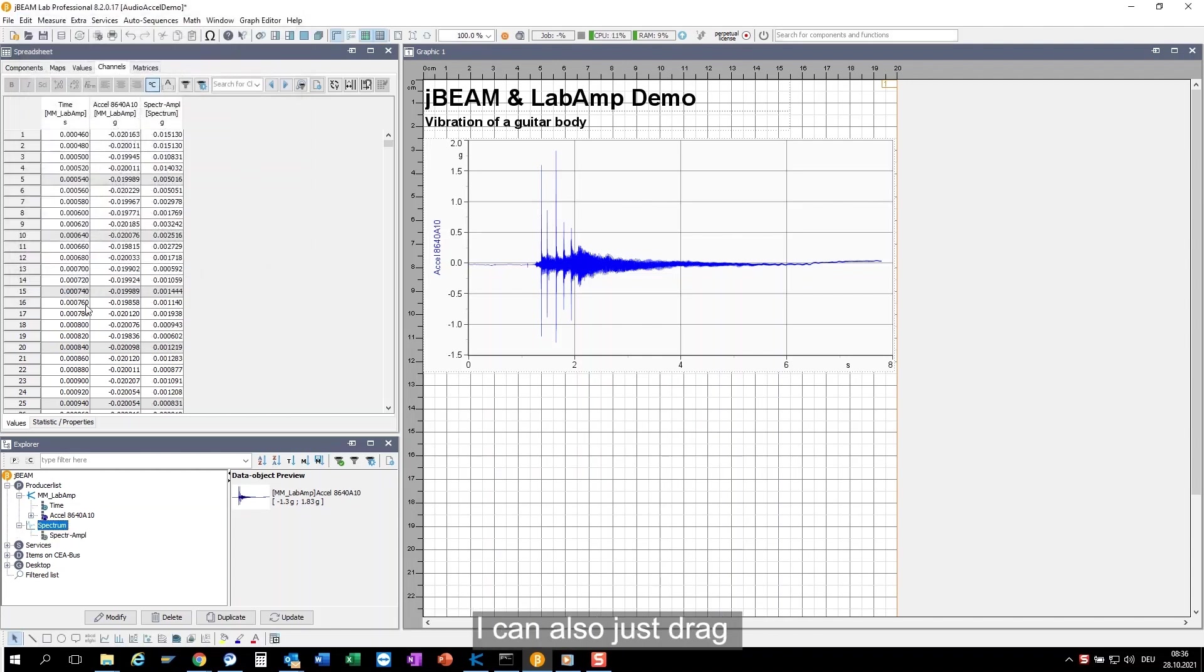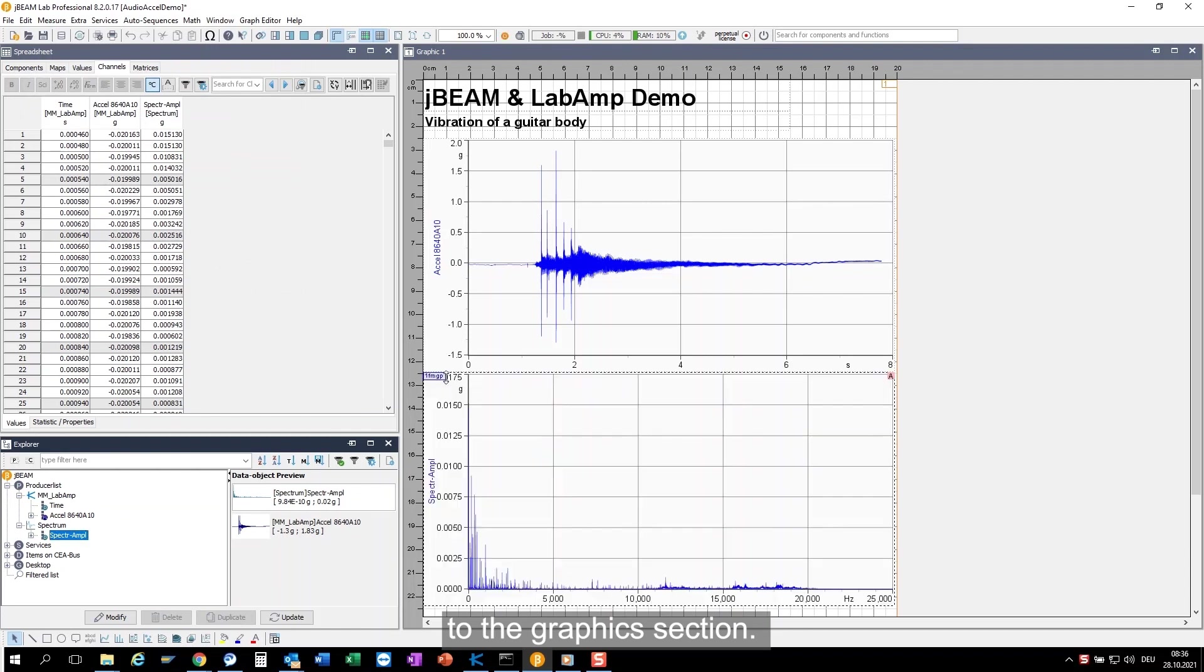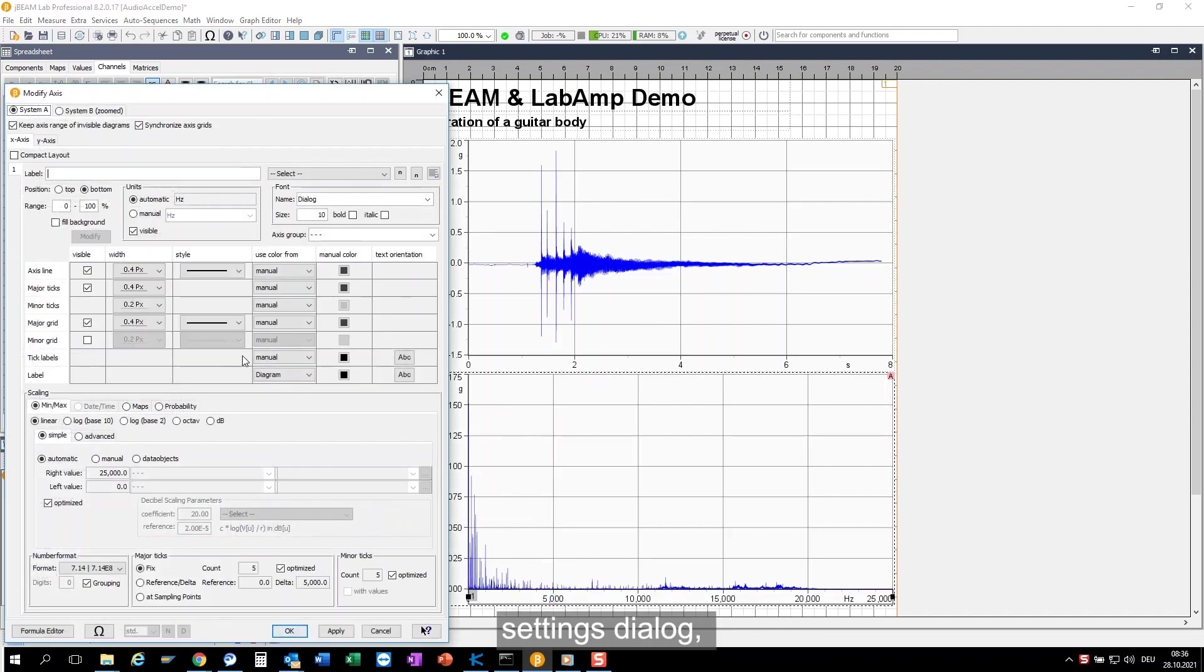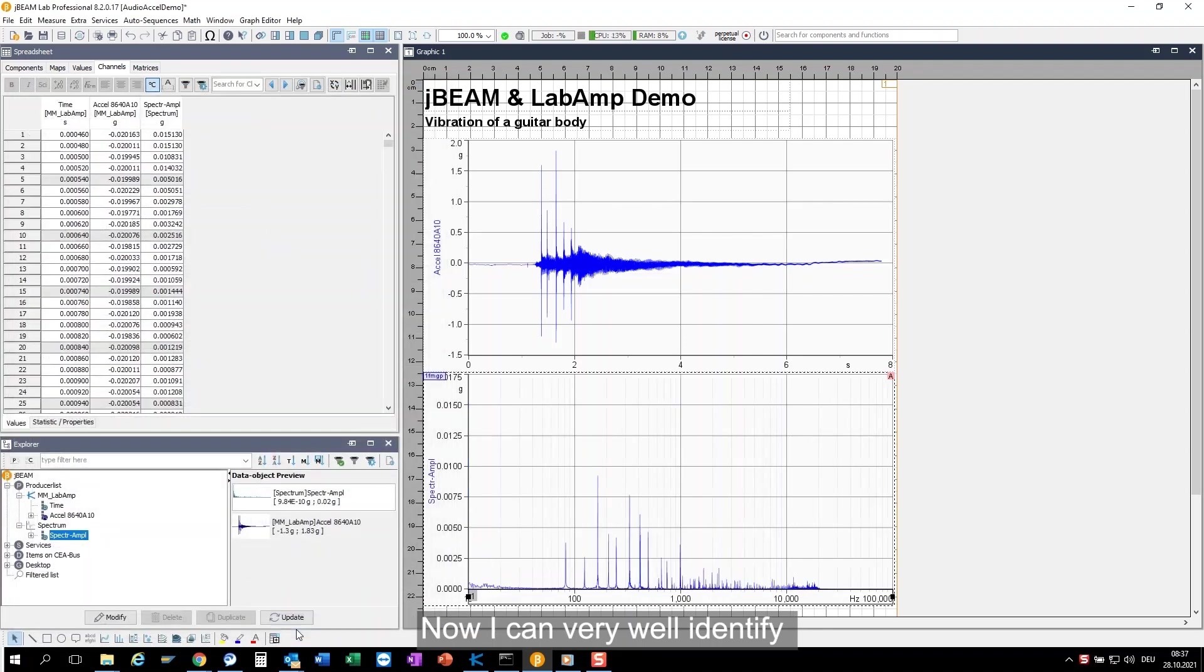To see the result I can also just drag the spectrum over to the graphics section and to make it a bit more appealing I adjust a few things in the axis settings dialog. Show the minor grid, select the logarithmic x-axis, define the min-max manually, adjust the number format and the number of minor ticks. Now I can very well identify the frequencies of the different strings plus their harmonics.